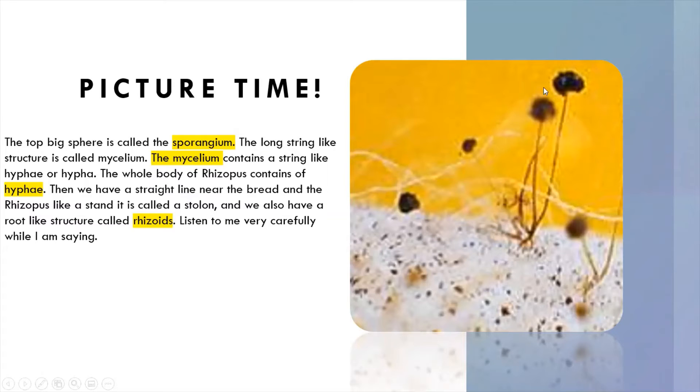The big ball right here is called the sporangium. There's spores in there, that's how it reproduces. Fungus reproduces asexually, so the spores are like seeds. They fall on bread and then give rise to new rhizopus.